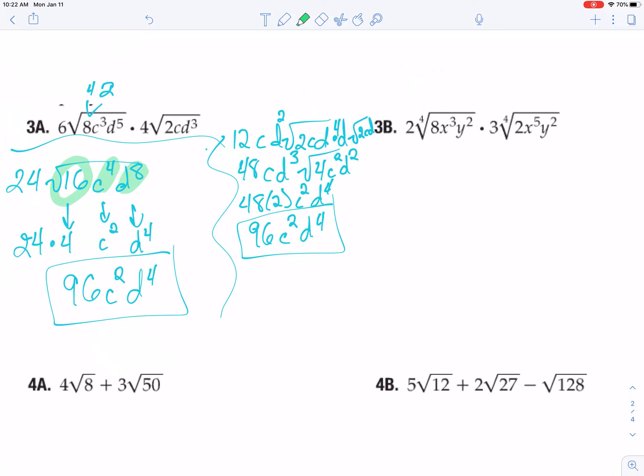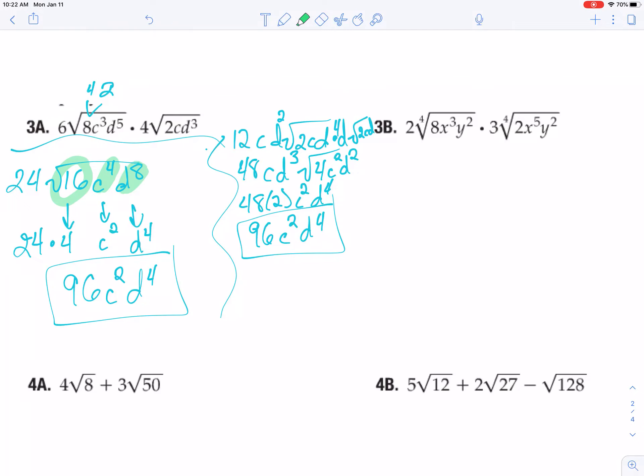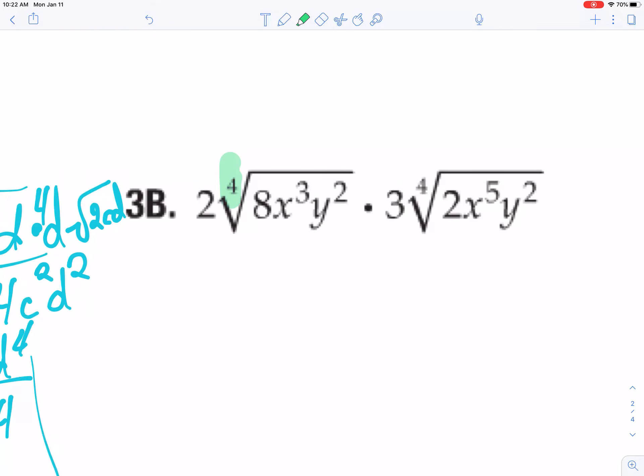One rule that you do need to be careful of is, if you're going to multiply the stuff that's underneath the radical sign, they do need to have the same index. So both of these are 4s. That's great. If one was a 4 and one was a 3, no go. You can only multiply things that are under the radical signs if they have the same index.